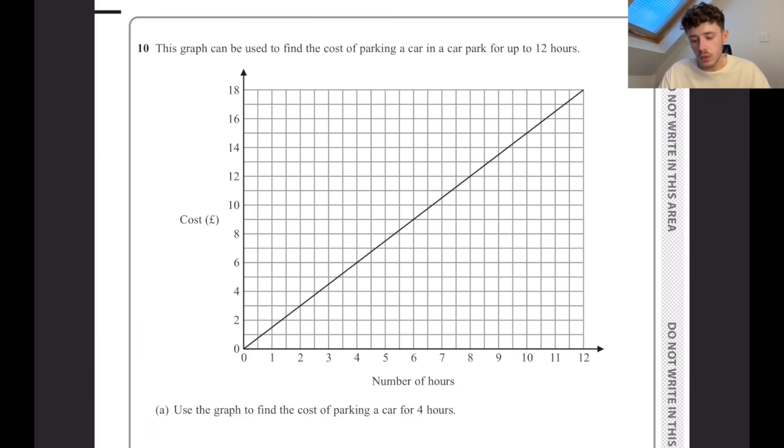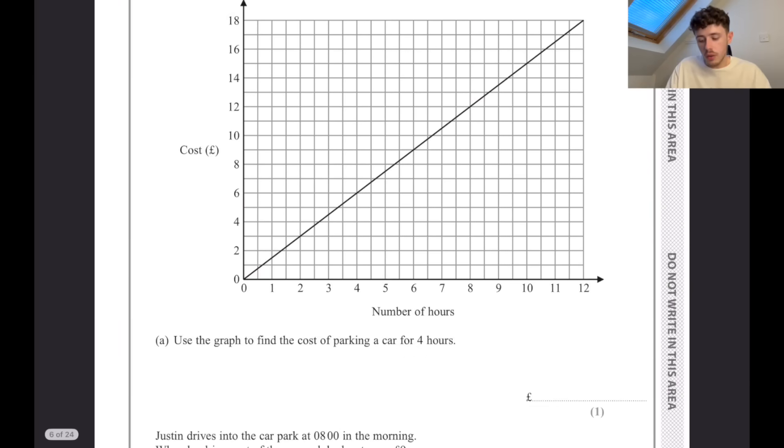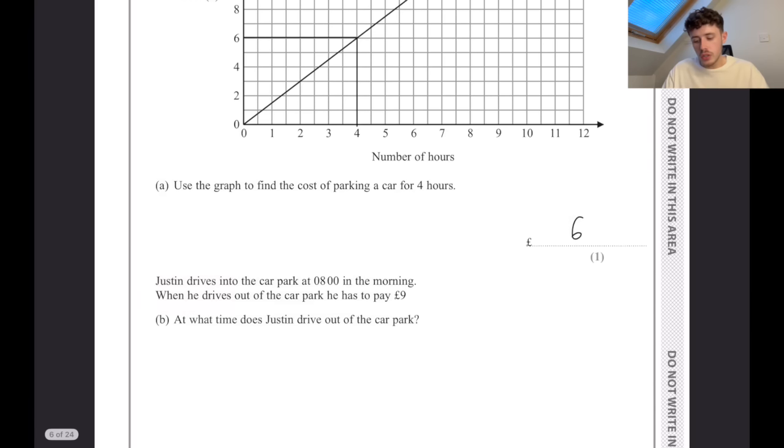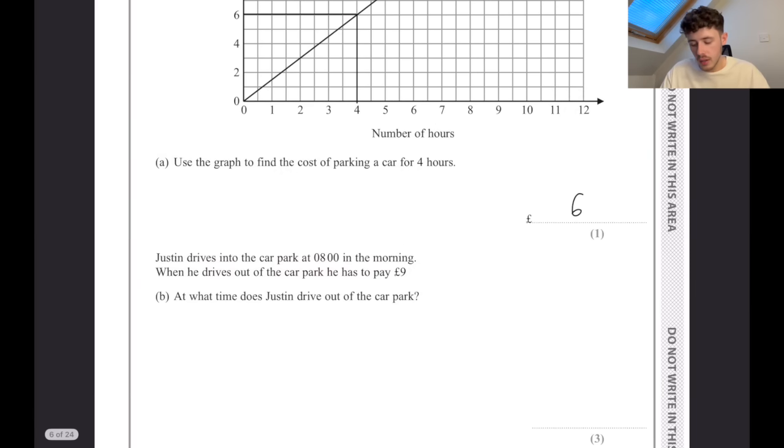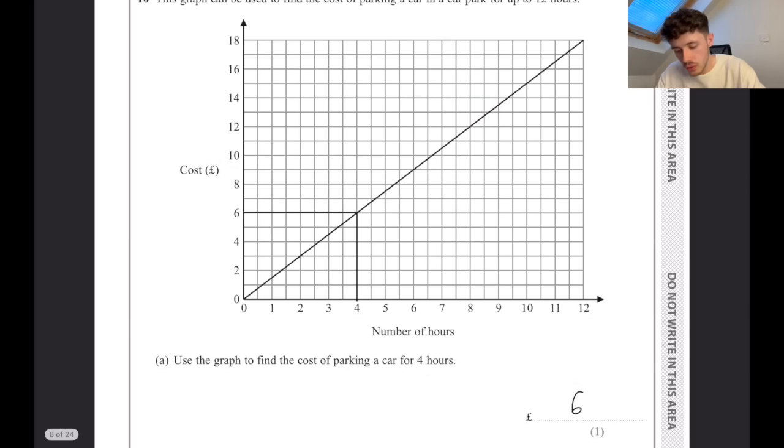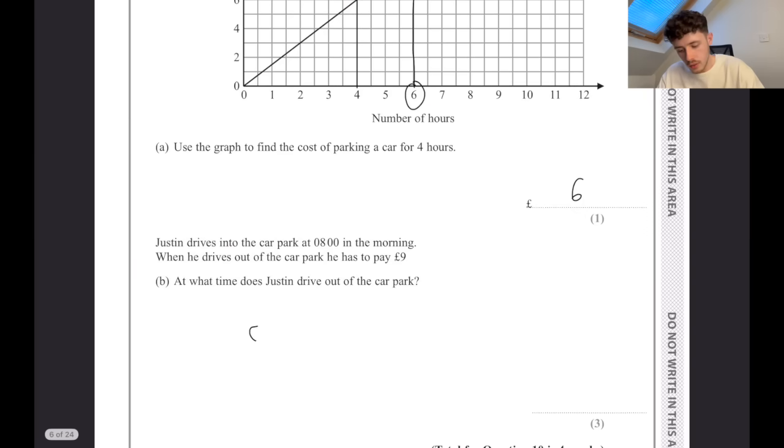This graph can be used to find the cost of parking a car in a car park for up to 12 hours. Use the graph to find the cost of parking a car for four hours. So you find four on the hours axis, go up, and you can see that is going to cost you six pounds. Justin drives in at eight o'clock in the morning. When he drives out, he has to pay nine pounds. So we find nine on the cost - that means Justin was in there for six hours. So 0800 plus six hours is going to be 1400 hours, or 2 p.m.